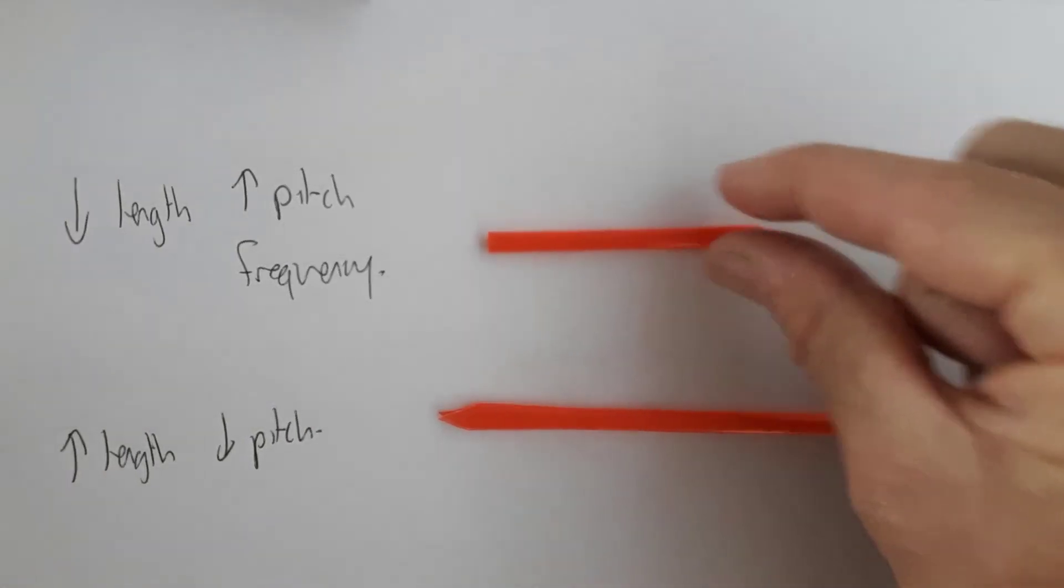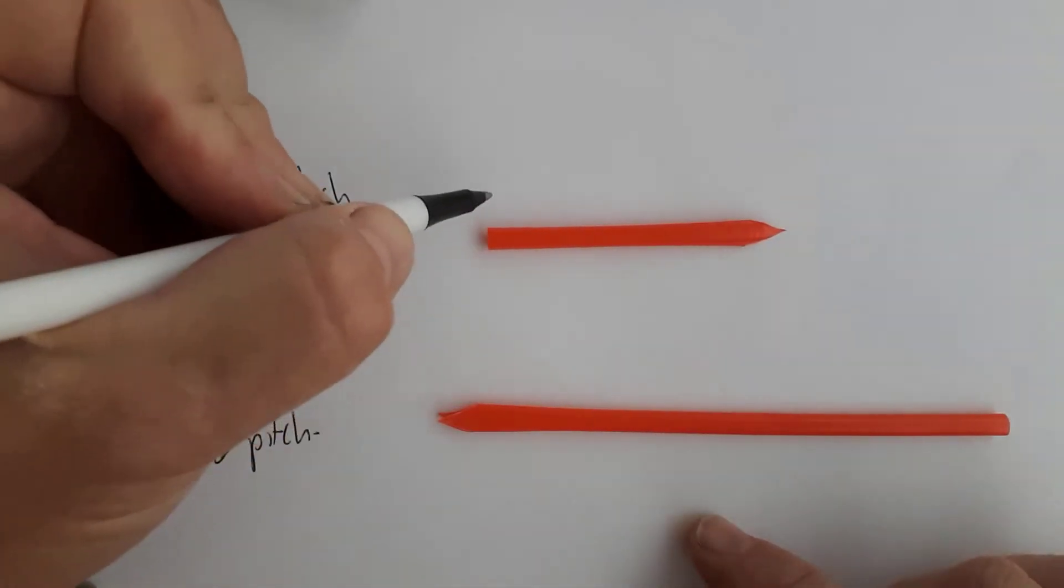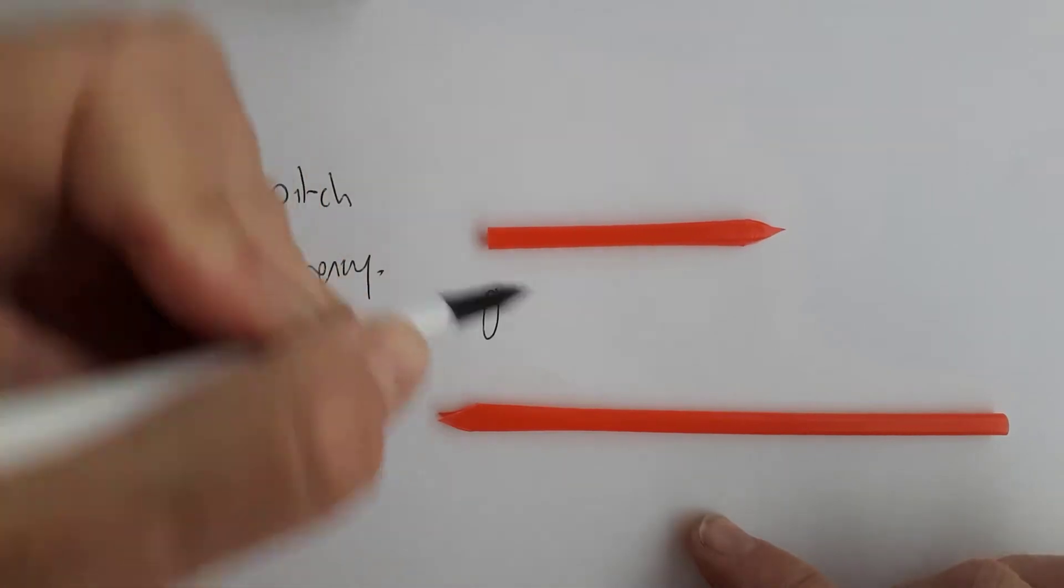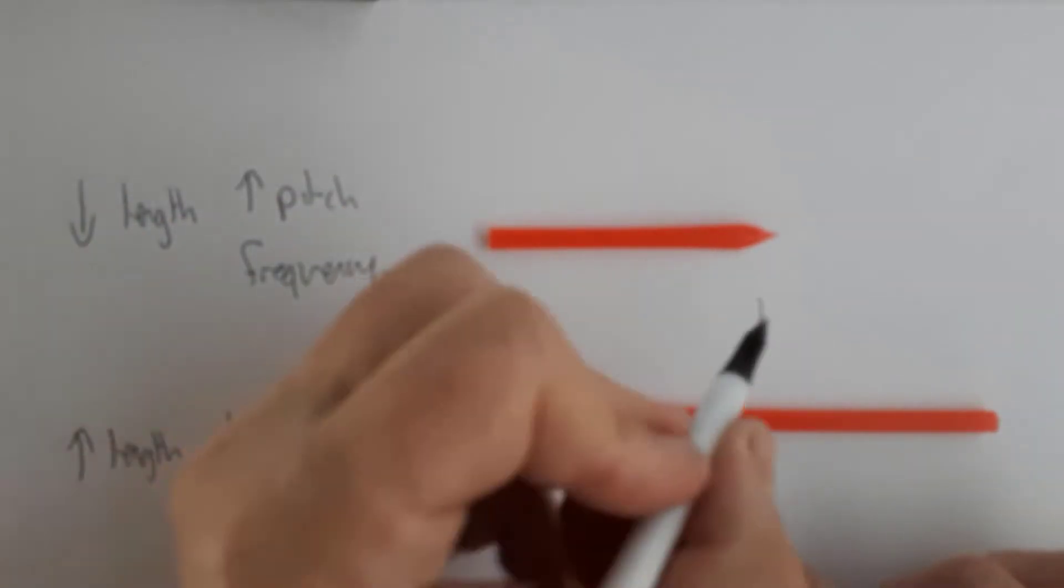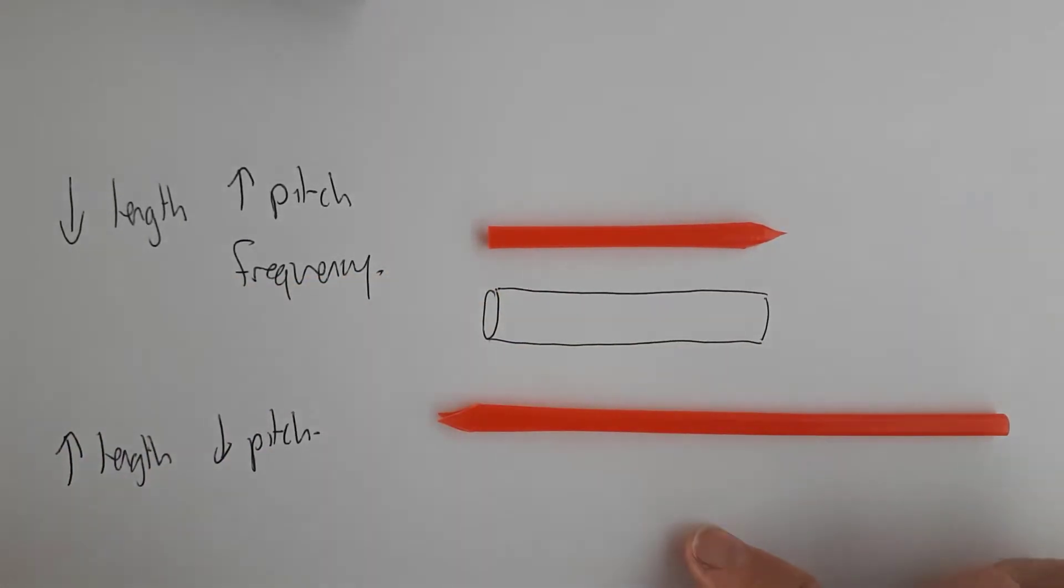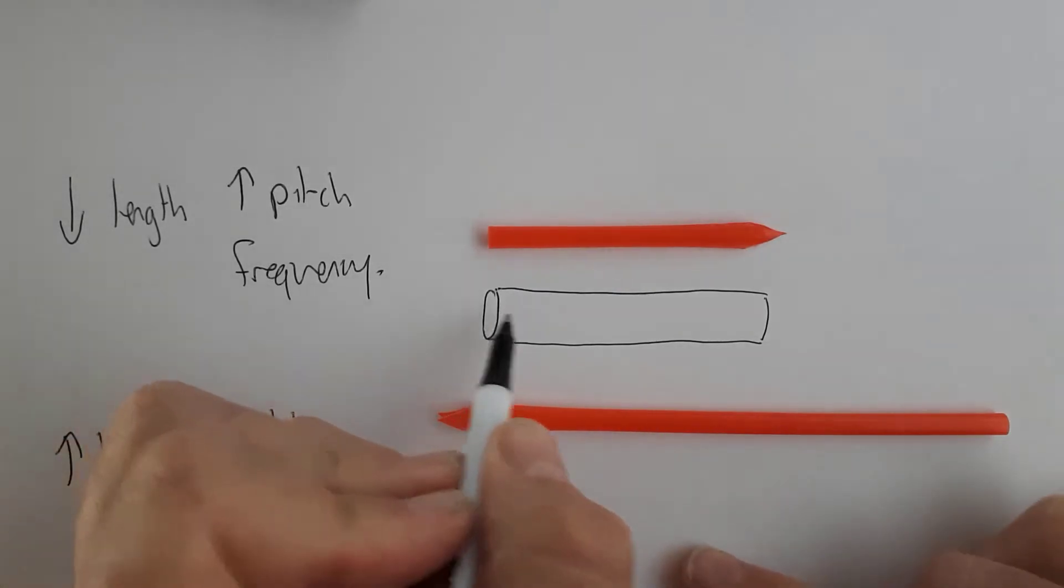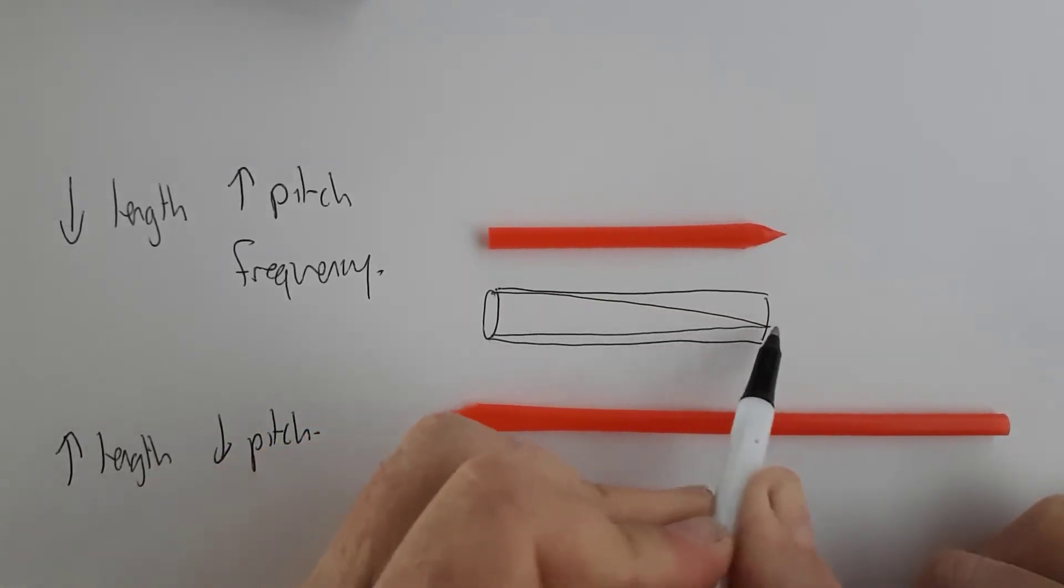Now, these pipes are an example of a pipe with one closed end. Because we've got this open end here, but the end that is in our mouth is closed. So with a pipe with one open end and one closed end, the wavelength of the sound wave is four times the length of the pipe.